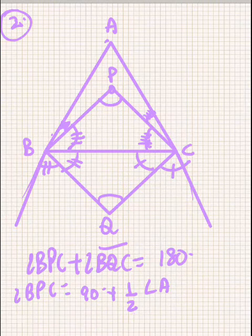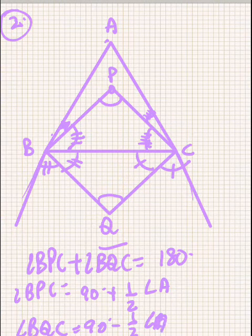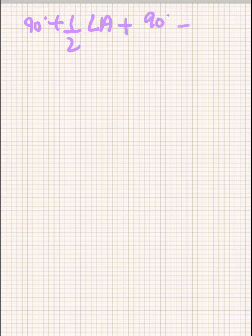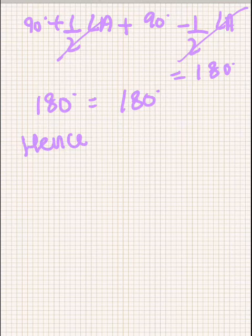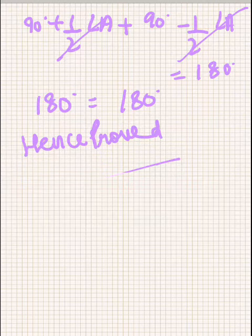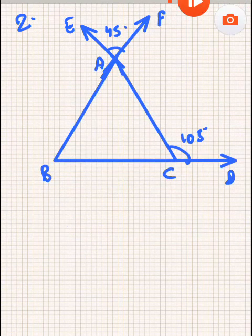These are again standard theorems. Since we have to prove this, we put the values: 90 degrees plus half A, plus 90 degrees minus half A, equals 180 degrees. The half A terms cancel, so 180 degrees equals 180 degrees. Hence proved. If this question is for greater marks then you have to prove how angle BPC and angle BQC were derived.